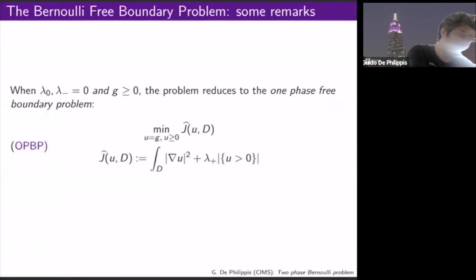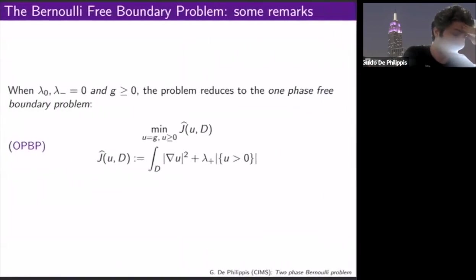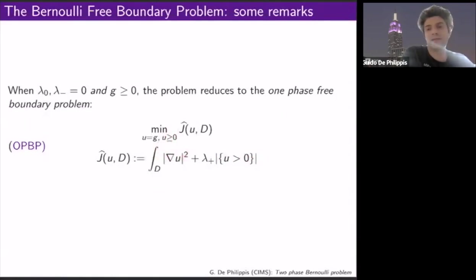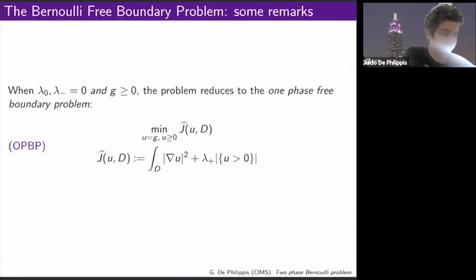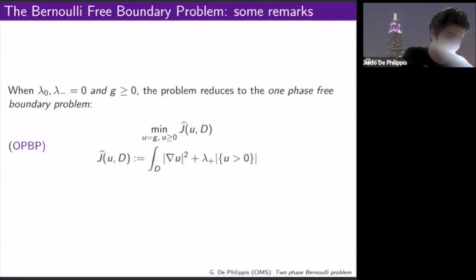An important special case is the so-called one-phase free boundary problem, in which you set two of the constants to zero and just penalize the measure of the positive part of the function, restricting to non-negative functions. What is usually called the one-phase Bernoulli problem is to minimize this functional among all non-negative functions.